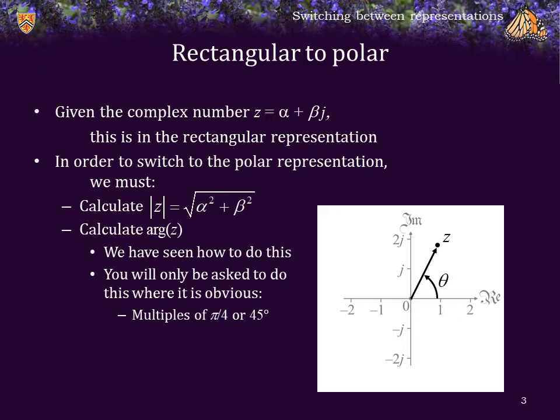The argument of, say, negative 1 minus j would be 180 plus 45, so that's 225 degrees. Or, alternatively, you can think of it as negative 180 plus 45, which would be negative 135. Either way, these are reasonably straightforward to calculate.